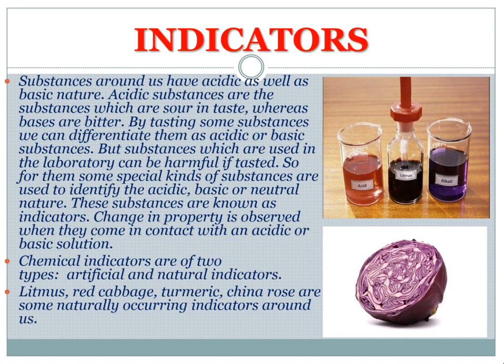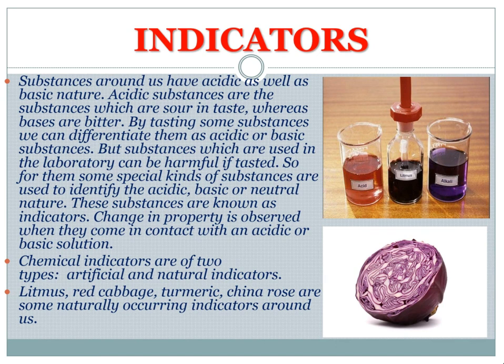Chemical indicators are of two types: artificial and natural indicators. Litmus, red cabbage, turmeric, and China rose are some of the naturally occurring indicators around us. The litmus solution and red cabbage are shown here as examples. This is the whole concept of indicators — hope you have understood and taken your snapshot.